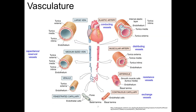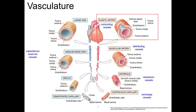Now we'll take a closer look at the characteristics of each type of vessel, starting with the different types of arteries, beginning with the large elastic arteries. This includes the aorta, the common carotid, and common iliac arteries. These are considered conducting arteries because they transport blood from the heart to the medium-sized distributing arteries. Large elastic arteries have two major characteristics: they receive blood from the heart under high pressure, and they keep blood circulating continuously even though the heart pumps intermittently. These arteries have histological features that allow them to do these jobs.